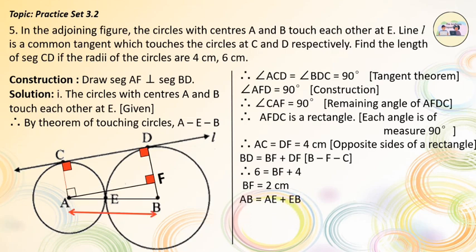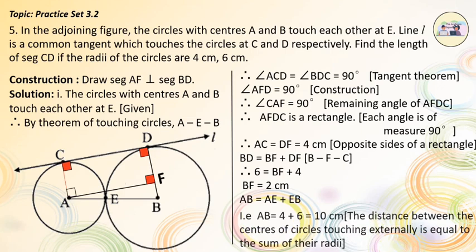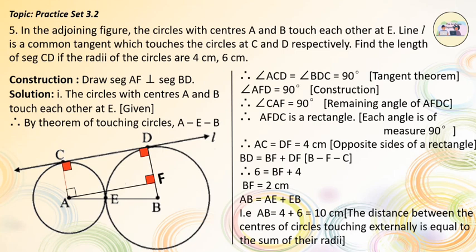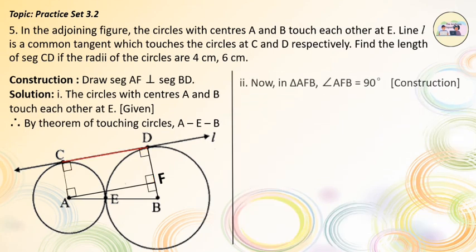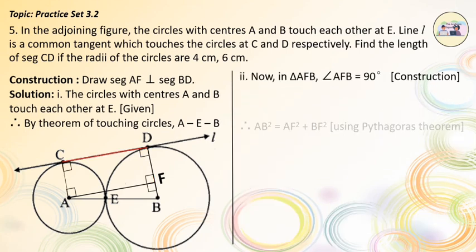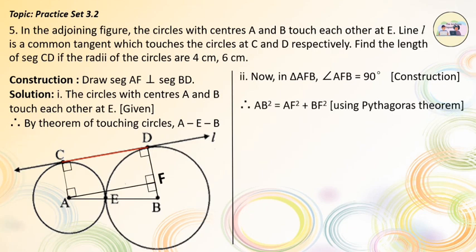Also, AB = AE + EB, which can be seen from the figure. That is, AB = 4 + 6 = 10 cm, as the distance between the centers of circles touching externally equals the sum of their radii. Now, in triangle AFB, angle AFB = 90 degrees by construction. Therefore, by the Pythagoras theorem: AB² = AF² + BF².